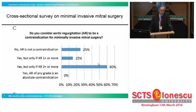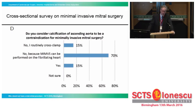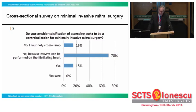The next question was aortic regurgitation. Here, 60% consider AR more than 2+ to be a contraindication, but still 40% would proceed with mini-mitral in case of trivial or moderate regurgitation. Regarding calcification of the ascending aorta, 50% find this is not a contraindication, and 70% are of the opinion that mini-mitral can be performed on the fibrillating heart. Personally, I have not had a very good experience with the fibrillating heart — when you lift the aortic root with the retractor, you may change the geometry of the root, and I had quite a lot of aortic regurgitation.